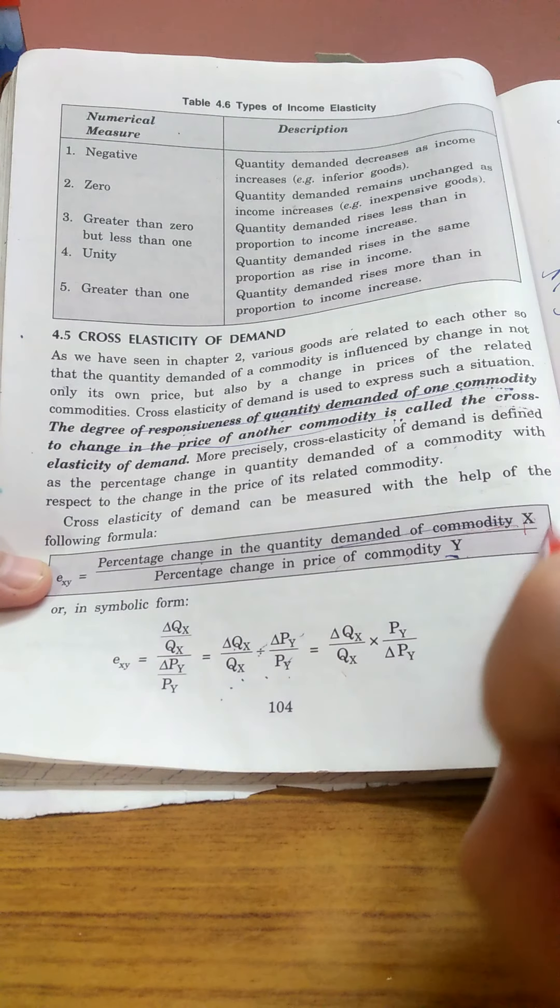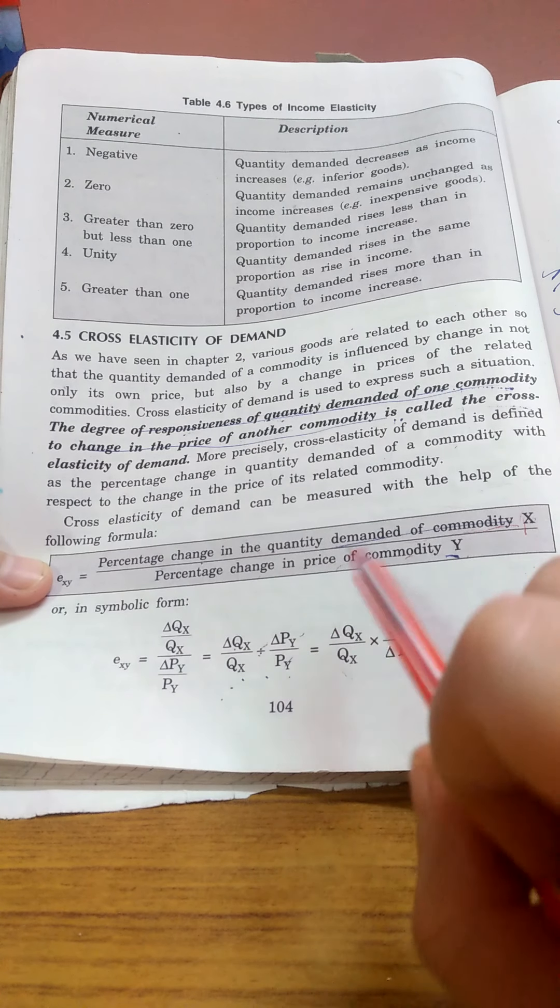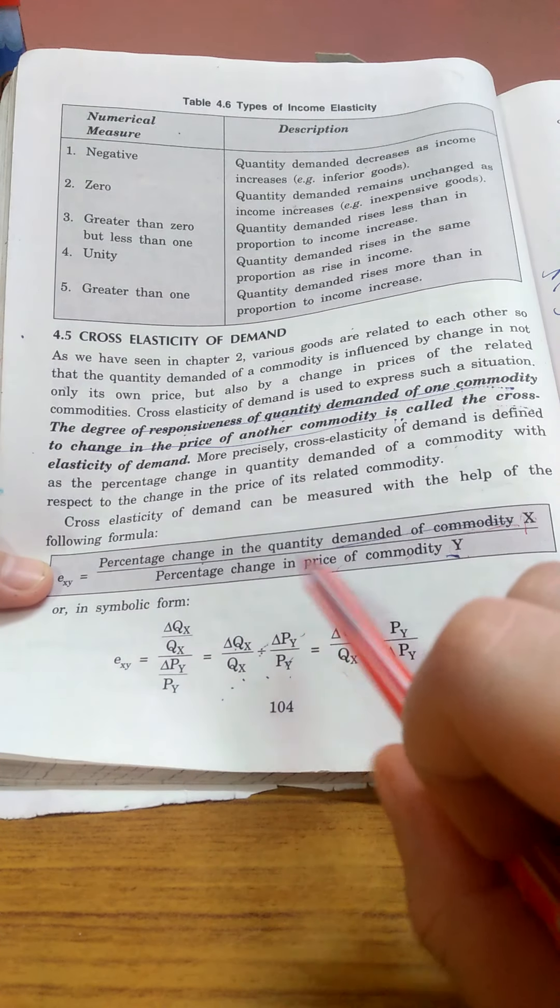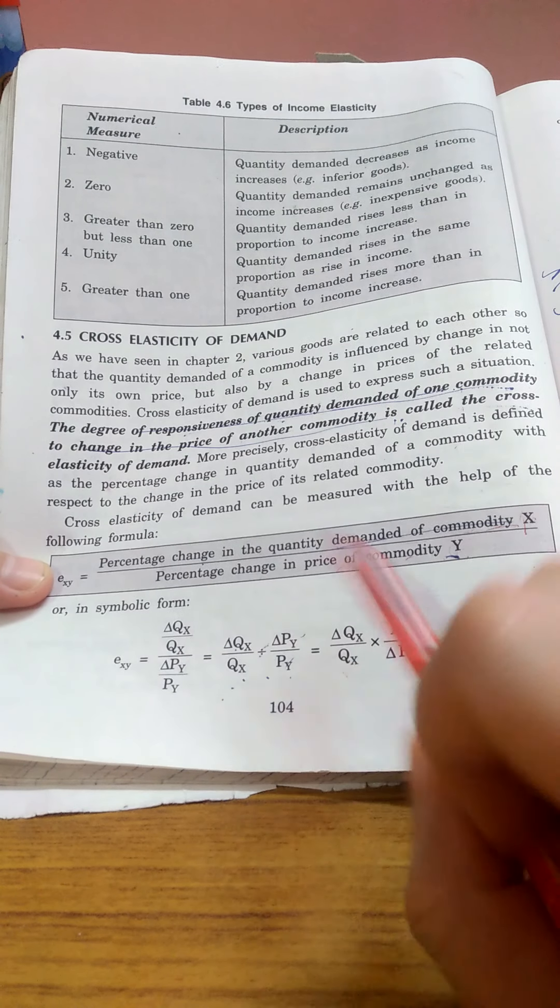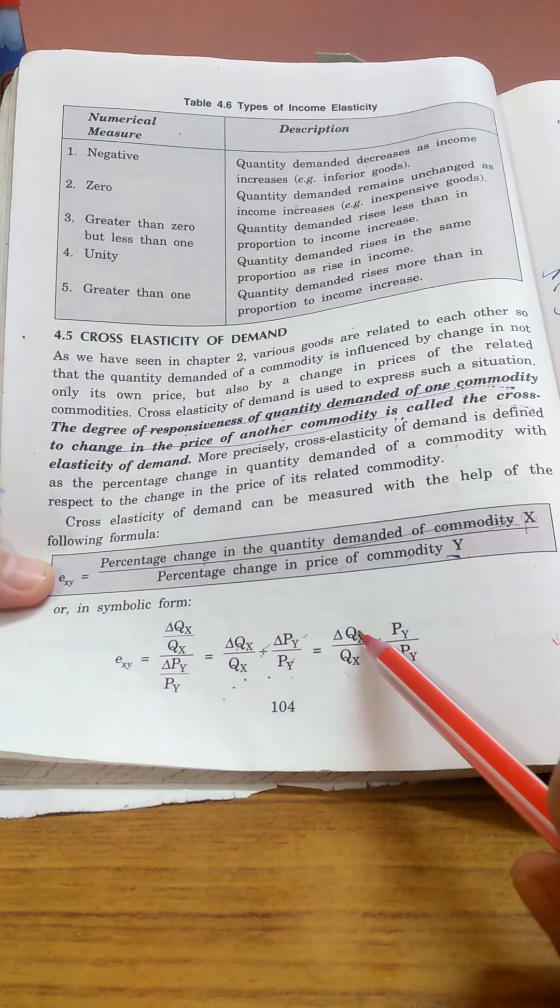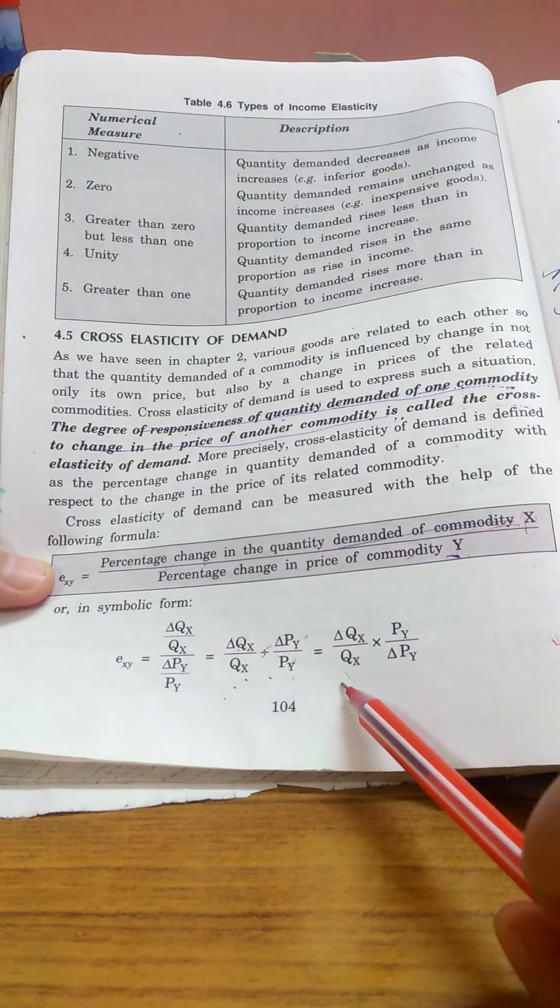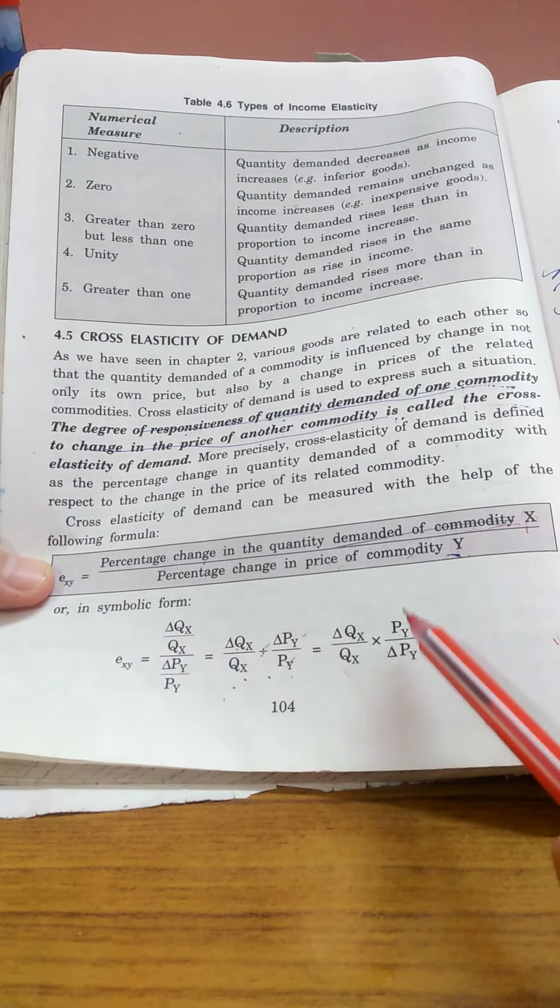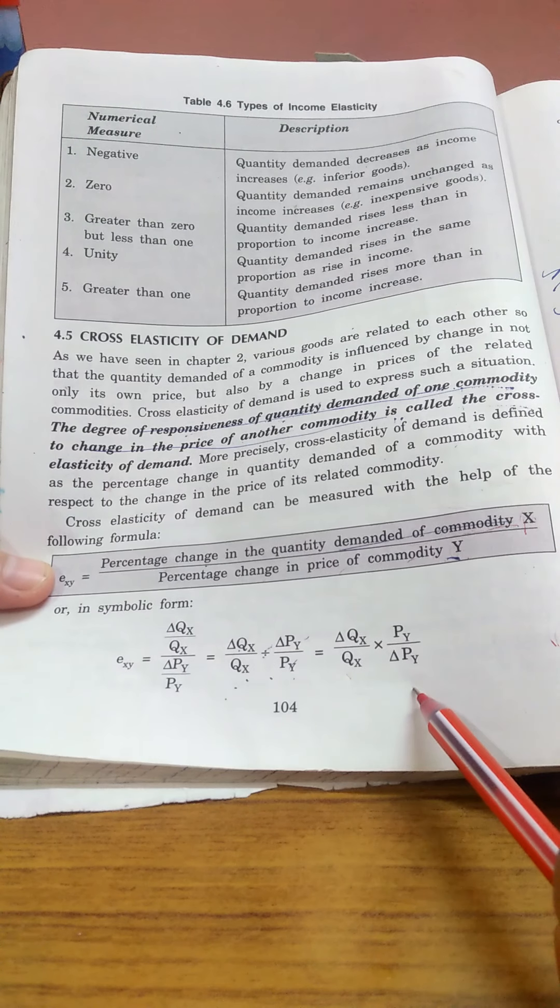So, change in quantity of X upon quantity demanded of X, times price of Y upon change in price of Y.